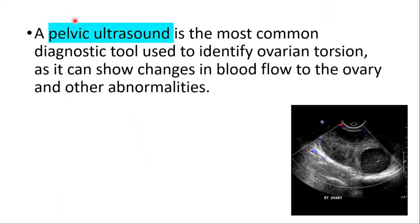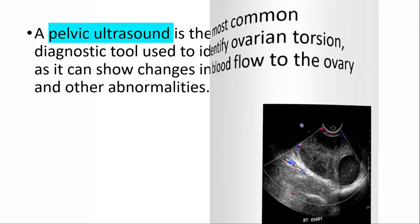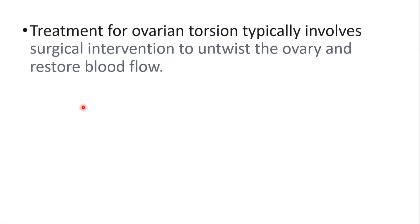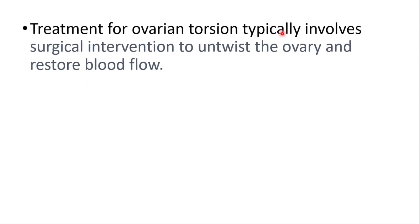The best diagnostic tool is pelvic ultrasound, which is used to identify ovarian torsion as it can show changes in blood flow to the ovary and other abnormalities.